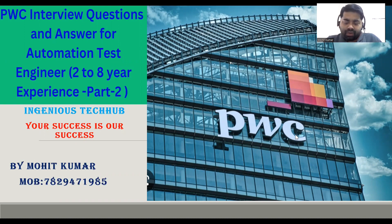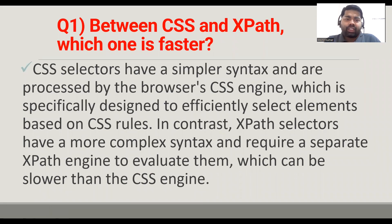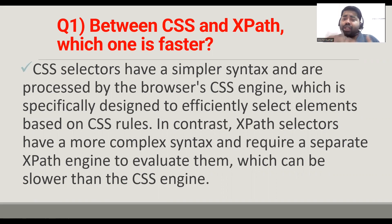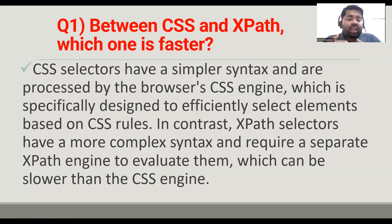The first question is: what is the difference between XPath and CSS, and which one is faster? CSS is faster than XPath. CSS selectors have a similar syntax and are processed by the browser's CSS engine, which is especially designed to efficiently select elements based on CSS rules. In contrast, XPath selectors have a more complex index and require a separate XPath engine to evaluate them, which can be slower than the CSS engine.